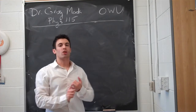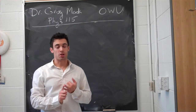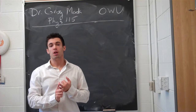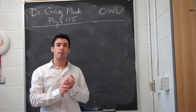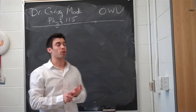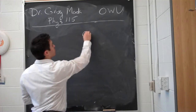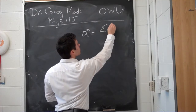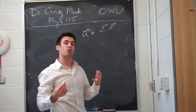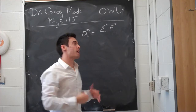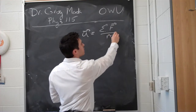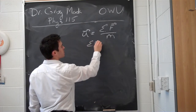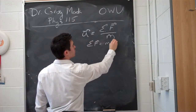Newton's second law says that if an object does experience a change in speed or direction — meaning an acceleration, a change in behavior — then that means it's experiencing some outside force. The acceleration it experiences is equal to the net force, the sum of all the forces that give a non-zero answer, divided by the object's mass. We usually write that as: sum of the forces equals ma.